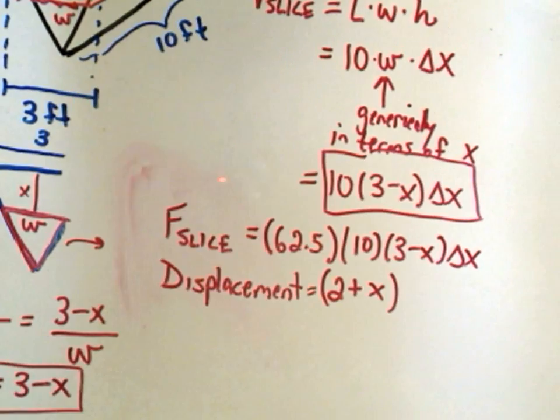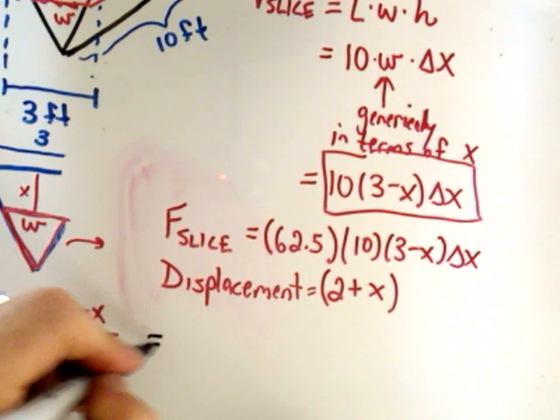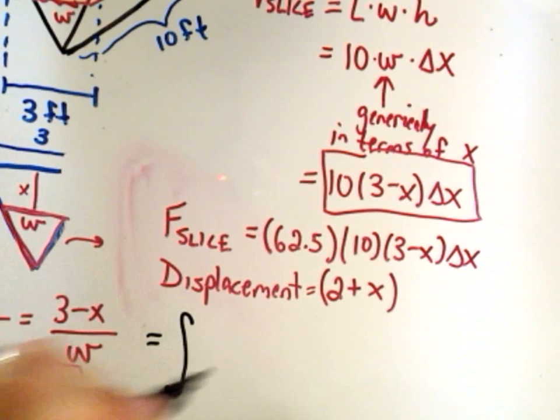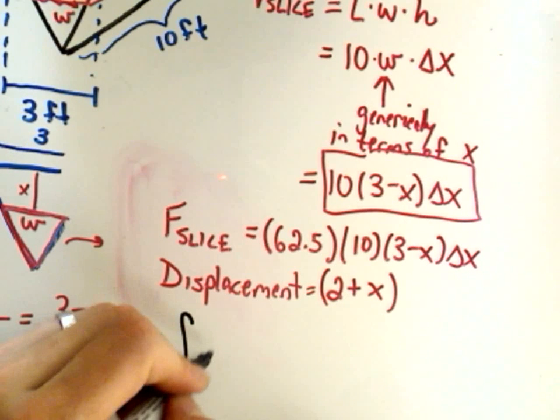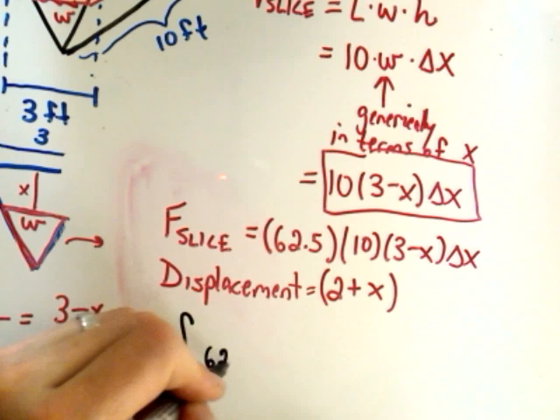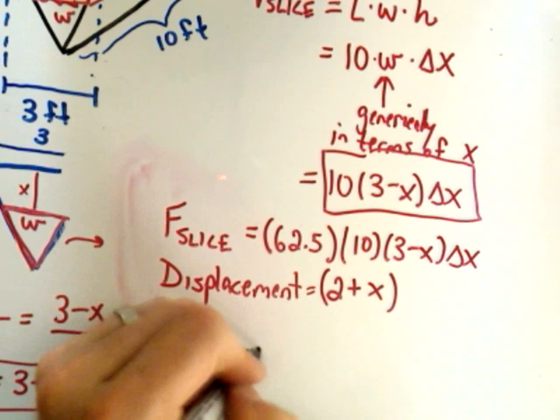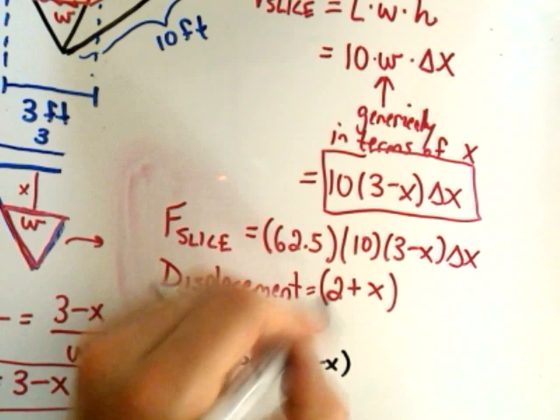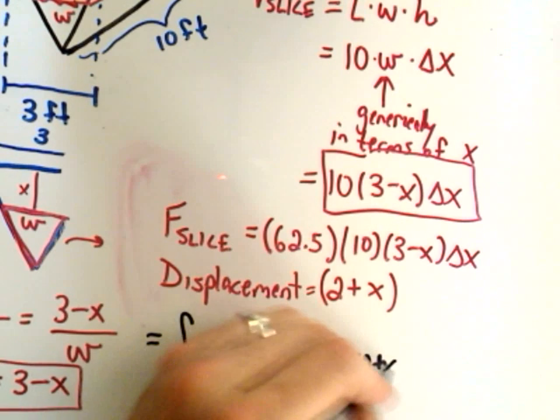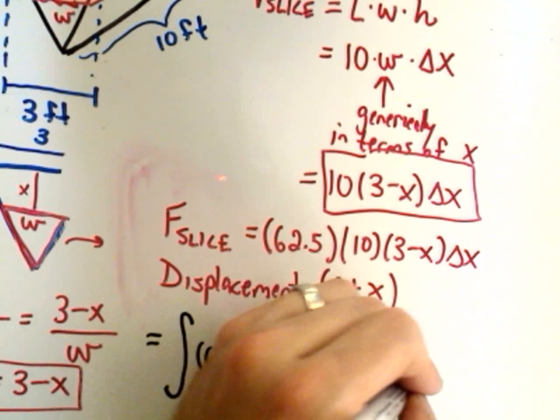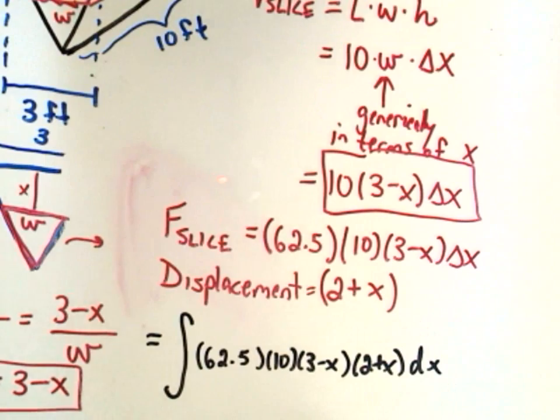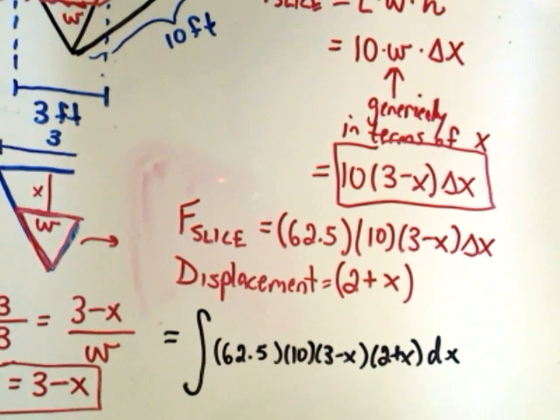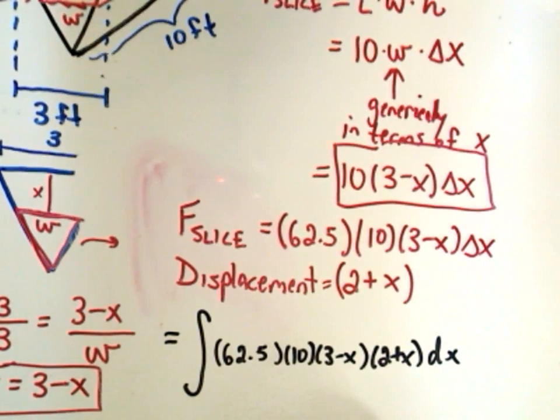Alright, so now this is nice. This is everything that goes inside of our integral. We still have to think about the limits of integration. But it says we take our force, 62.5 times 10 times 3 minus x. The displacement is 2 plus x. Our delta x comes out as a dx.